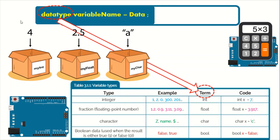Let's start with how we can declare and initialize the first line in our code. This box is called 'myInt' — that is the name of the box, the variable name. We need to know our data so we can decide the data type. In this case, the number 4 is an integer. Integers are whole numbers like 1, 2, 0, 300, 200. The variable name here is 'myInt'.